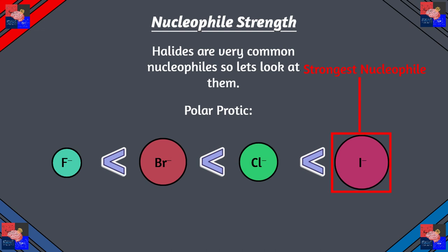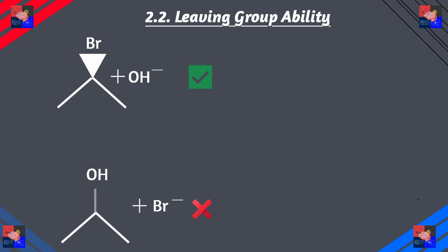Now let's look at leaving group ability. I put this in the same category because it follows that if something is such a good nucleophile and is very eager to enter the molecule, it won't be in a rush to leave. Since hydroxide is a very strong nucleophile, it is going to be a terrible leaving group. But bromide is both a good nucleophile and a good leaving group because it is stable by itself. Since water is not such a strong nucleophile, it is also a good leaving group.